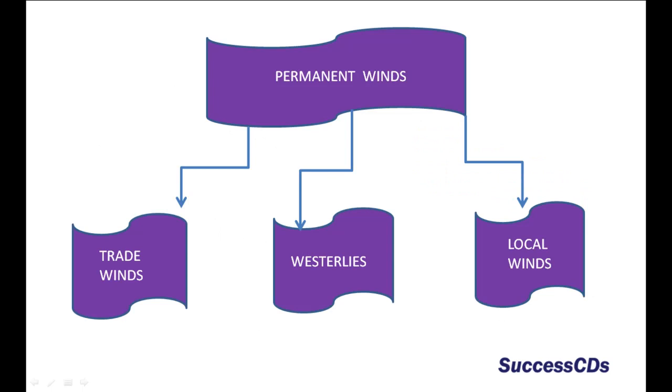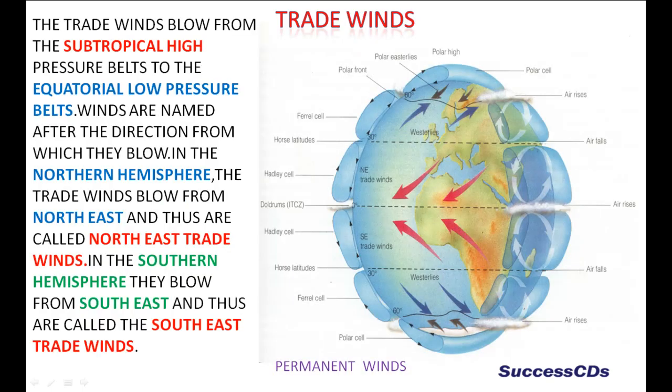Permanent winds are of three types: trade winds, westerlies, and polar winds. The trade winds blow from the subtropical high pressure belts to the equatorial low pressure belts. Winds are named after the direction from which they blow. In the northern hemisphere, the trade winds blow from the north east and thus are called the north east trade winds.